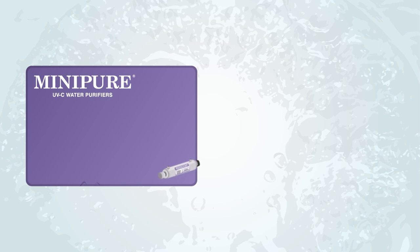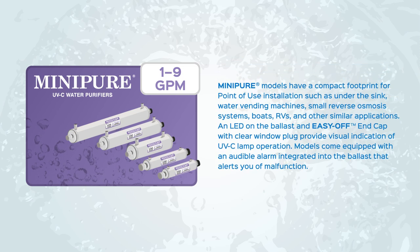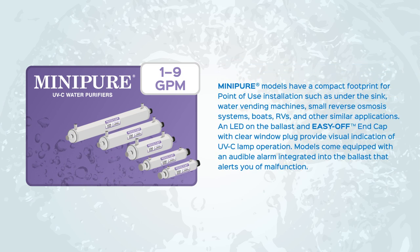Minipure UVC water purifiers, 1 to 9 GPM. Minipure models have a compact footprint for point of use installation, such as under the sink, water vending machines, small reverse osmosis systems, boats, RVs, and other similar applications. An LED on the ballast and easy-off end cap with clear window plug provide visual indication of UVC lamp operation. Models come equipped with an audible alarm integrated into the ballast that alerts you of malfunction.